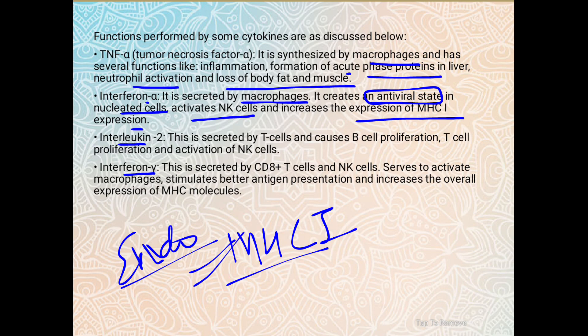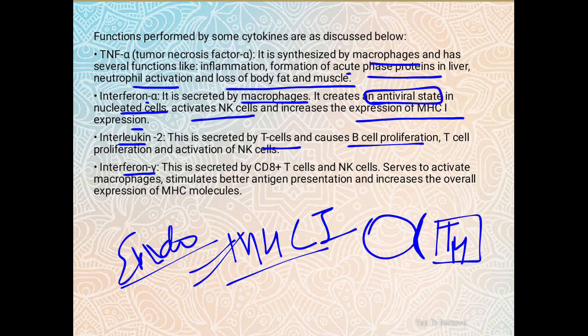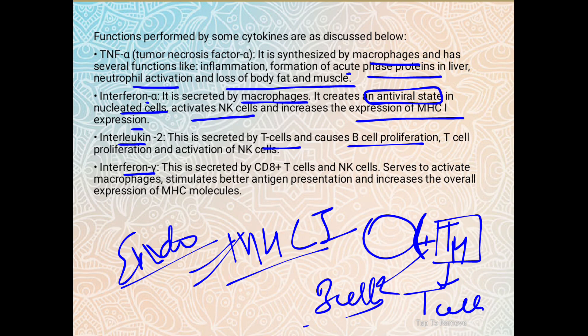Interleukin-2 is secreted by T cells and causes B cell proliferation. Interferon Gamma is secreted by CD8 T cells and serves to activate macrophages, stimulate better antigen presentation, and increase the overall expression of MHC molecules.